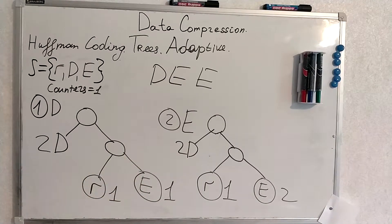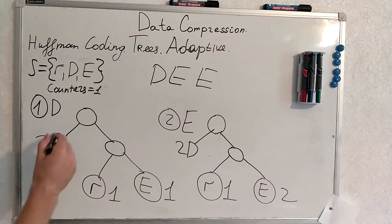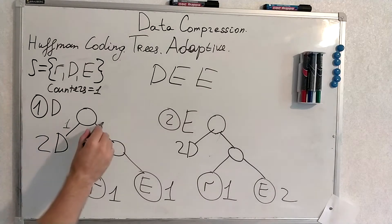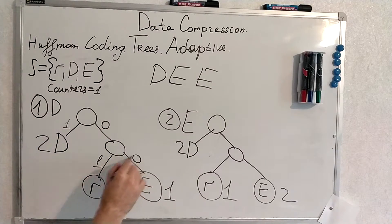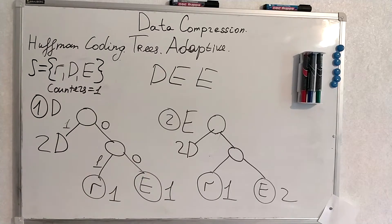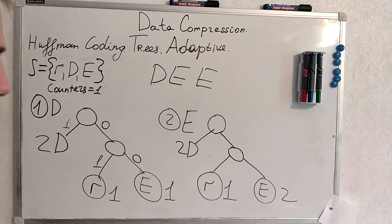In such a manner that we have faced D, right, so let's give the shortest codes to D. Now comes E, but the counter for D is already two, thus we do not change the tree yet.